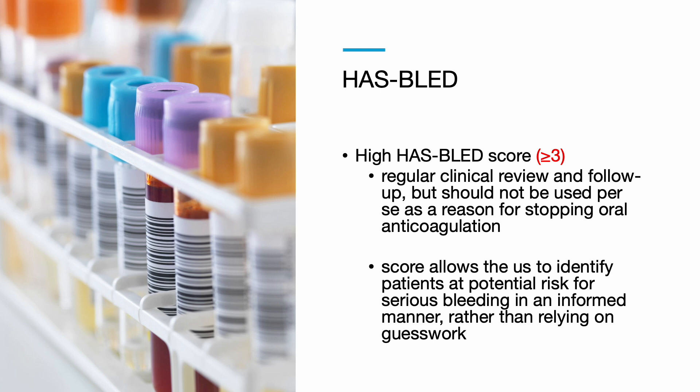A high HAS-BLED score of at least 3 is indicative of the need for regular clinical review and follow-up, but should not be used as a reason for stopping oral anticoagulation. A high HAS-BLED score allows clinicians to identify patients at potential risk for serious bleeding in an informed manner rather than relying on guesswork, as it has been shown that clinicians are poor at estimating bleeding risk.